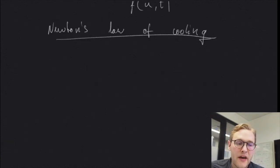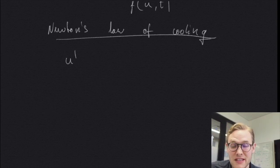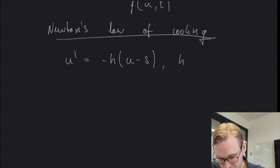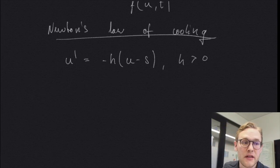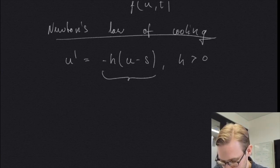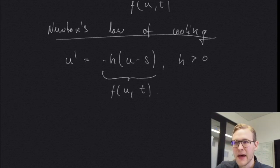Lastly, we also have Newton's law of cooling, where the u in this case is the temperature of a body, and the change in the temperature will be simply minus h times u minus s. And here also we have a parameter h, which is larger than zero, is the proportionality constant, which you normally estimate from experiment. And s is the temperature of the surroundings of the system or the object that is cooled. And again, we see that the right hand side is some function dependent on u and t.